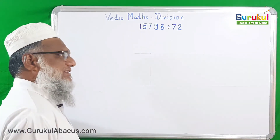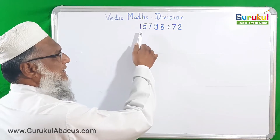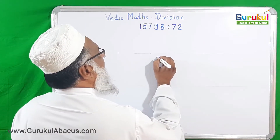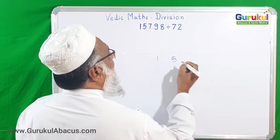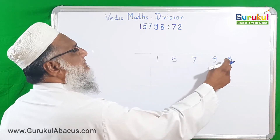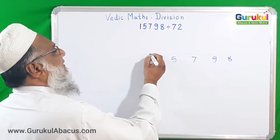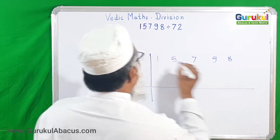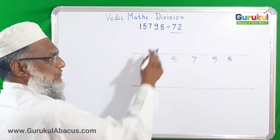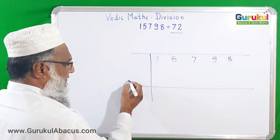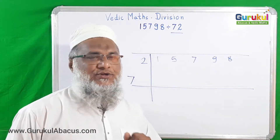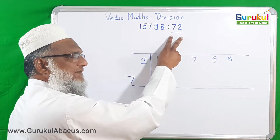Our first example is 15,798 divided by 72. I am writing the number 15,798, keeping some space between the digits because we require it, and putting some lines to make it easy. The divisor is 72 — I want to write 7 here and 2 here separately.